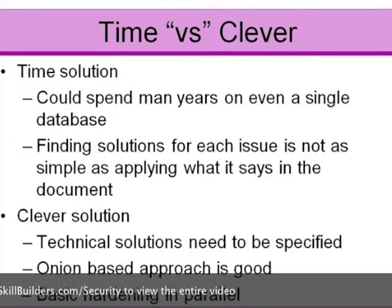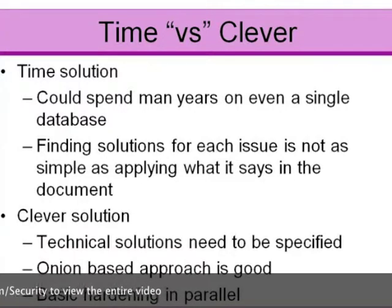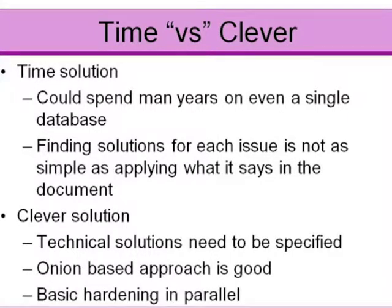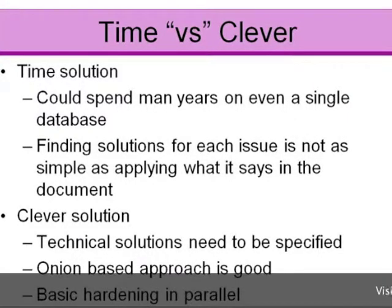Imagine a checklist with 400 checks in it. Imagine you've got 100 databases — that's 40,000 things you have to fix. You're talking about man-years of work to diligently go through all of those databases and do all of that fixing. The problem is, as I've just explained, it doesn't say anything about your data. Your data is probably still just as insecure as it was at the beginning. You've brought up the level of basic hardening, but you haven't secured the actual data.